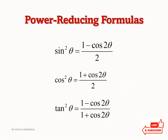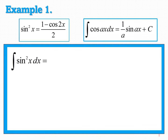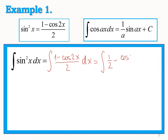We will use power reducing formulas to integrate sin²x and cos²x. The first example: according to the power reducing formula, we can write the integrand as (1 minus cos2x) over 2 dx.